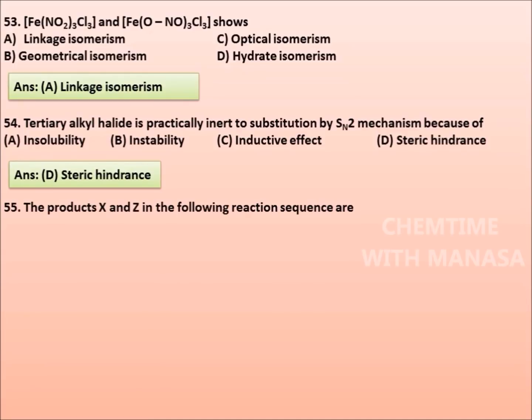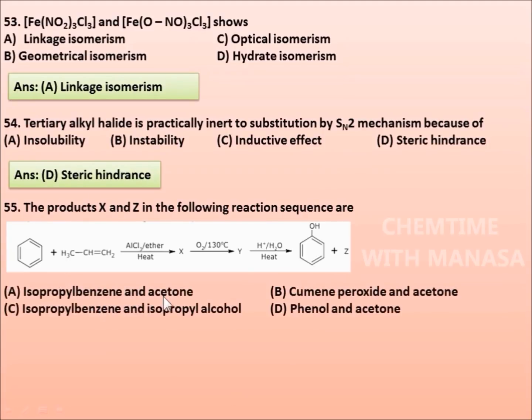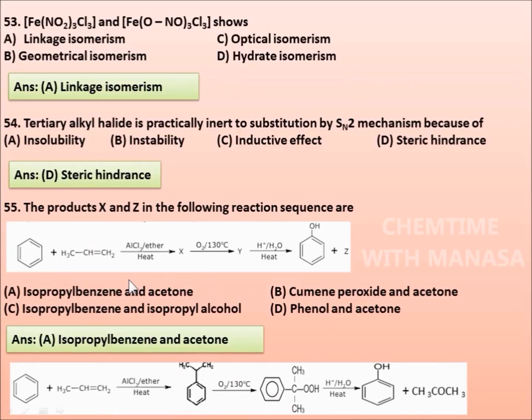The products X and Z in the following reaction sequence are: benzene when heated with propene in presence of AlCl3 in ether, we get a compound X. X when oxidized in presence of air at 130 degree Celsius, we get a compound Y, which when treated with dilute acid gives phenol and a compound Z. And the options are isopropylbenzene and acetone, cumene hydroperoxide and acetone, isopropylbenzene and isopropyl alcohol, or phenol and acetone. The correct answer is isopropylbenzene and acetone.